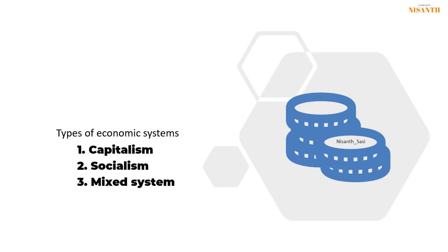To summarize the three economic systems: in capitalism, all resources are owned and operated by private companies. In socialism, resources are owned and operated by government agencies. In a mixed system, both private individuals or private companies and government bodies jointly make the final decisions about the production process and final output.